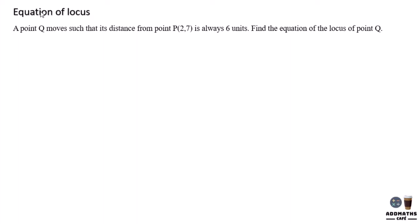Equation of locus. When they talk about equation of locus, you need to apply the distance formula. In this case, a point Q moves such that its distance from P means that QP is always 6 units. You do not know what is Q, but you know what is P. When I ask you to find the equation of locus, you need to apply the distance formula for QP and make it equal to 6.